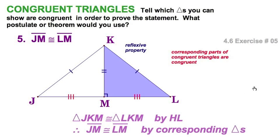The two triangles are congruent by hypotenuse-leg. And therefore, the two remaining sides, JM and LM, are congruent.